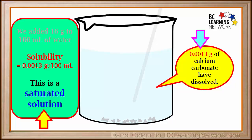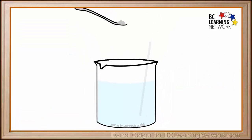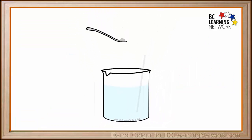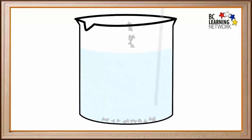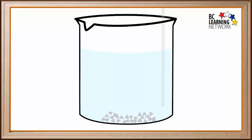So what do you think will happen if we add another teaspoon of calcium carbonate to this saturated solution? We see that the second teaspoon also sinks to the bottom without dissolving. Once a solution is saturated, we cannot dissolve any more solute in it.